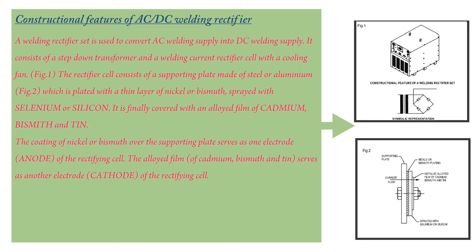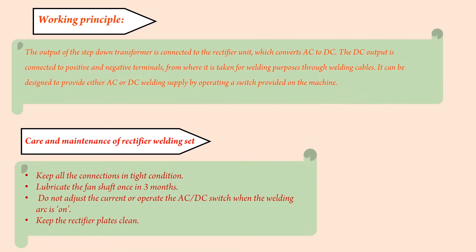The alloyed film of cadmium, bismuth, and tin serves as another electrode — the cathode of the rectifying cell. Working Principle: The output of the step-down transformer is connected to the rectifier unit, which converts AC to DC. The DC output is connected to positive and negative terminals, from where it is taken for welding purposes through welding cables. It can be designed to provide either AC or DC welding supply by operating a switch provided on the machine.